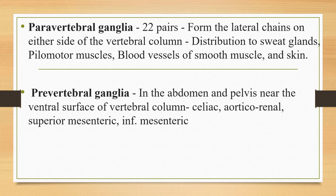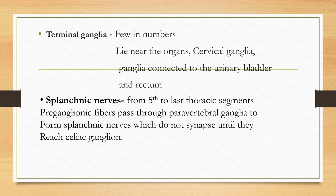There are 22 pairs of paravertebral ganglia forming the lateral chain on either side of the vertebral column, distributing to sweat glands, pilomotor muscles, and blood vessels of smooth muscle and skin. Pre-vertebral ganglia are located in the abdomen and pelvis near the ventral surface of the vertebral column; these include the celiac, aorticorenal, superior mesenteric, and inferior mesenteric ganglia. Terminal ganglia are few in number and lie near organs such as the urinary bladder or rectum. The splenic nerve is formed from the fifth to last thoracic segment; pre-ganglionic fibers pass through the paravertebral ganglia without synapsing until they reach the celiac ganglia.